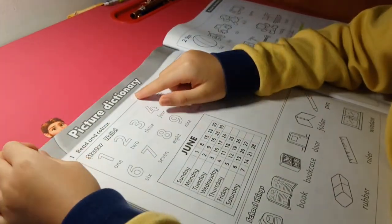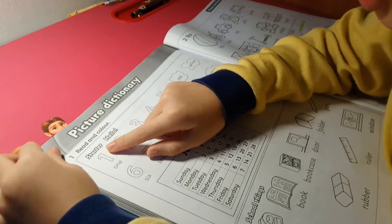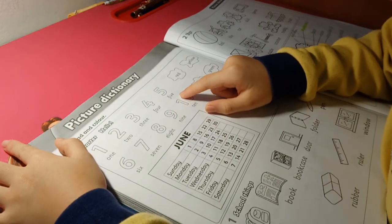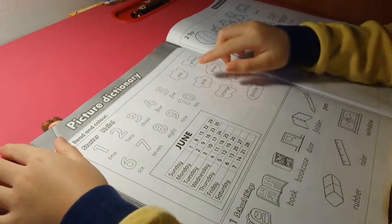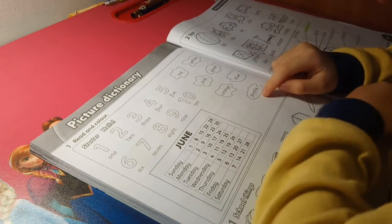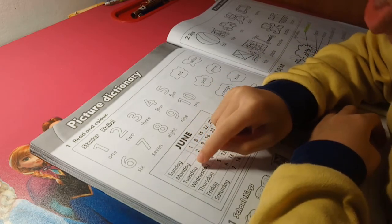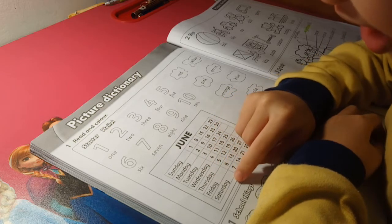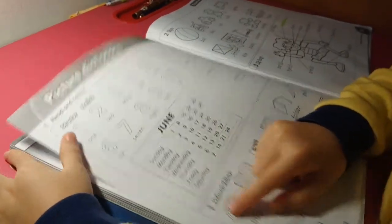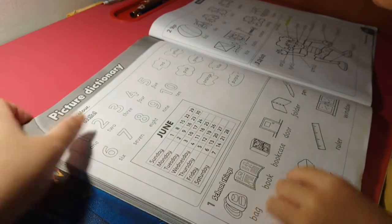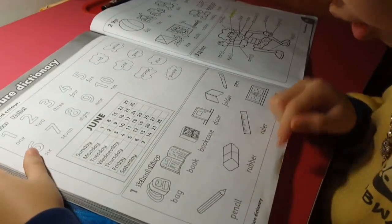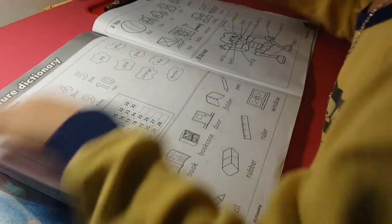Picture dictionary. Friday, Saturday, Thursday. One. School things. Bag, book, bookcase, door, folder, pen, pencil, rubber, ruler, window.